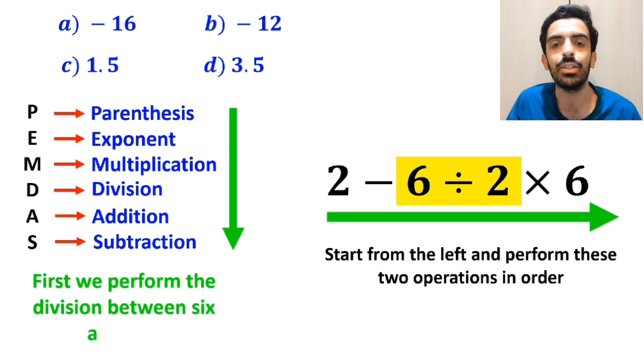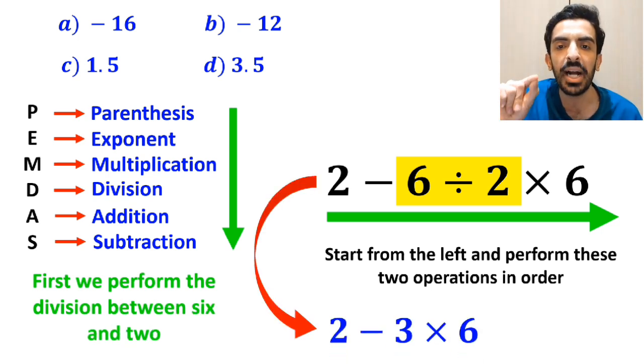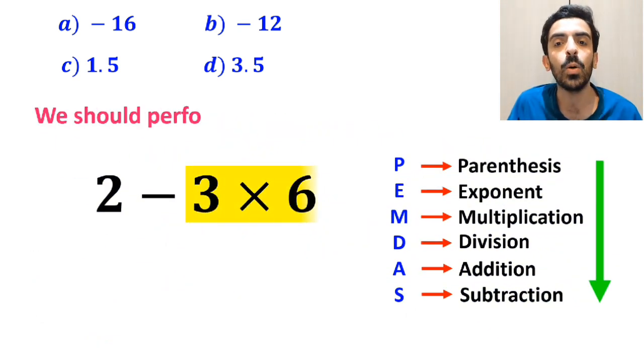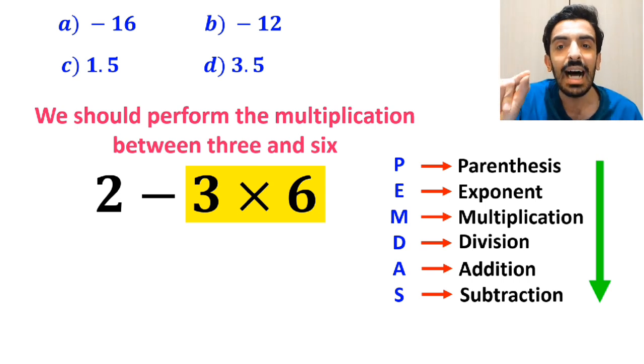So first we perform the division between 6 and 2, and instead of the original expression we can write 2 minus 3 then times 6. And the next step we should perform the multiplication between 3 and 6 because multiplication has a higher priority than subtraction.